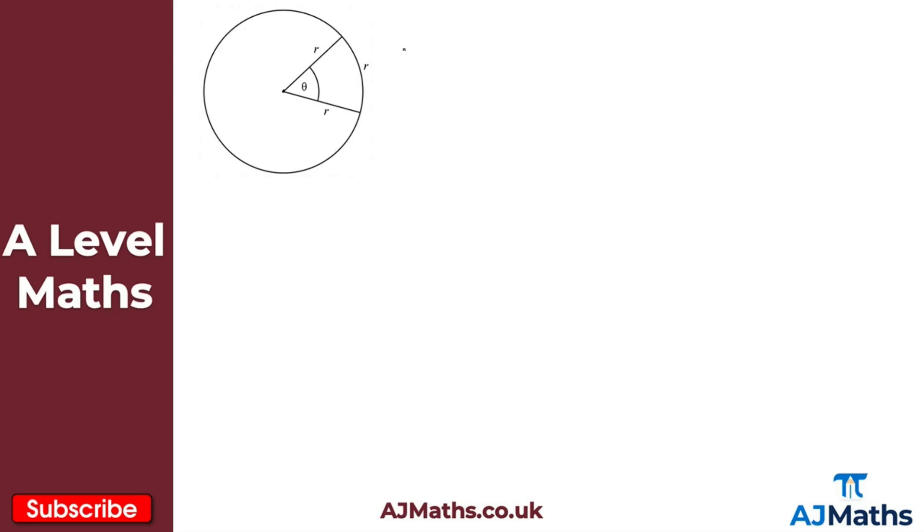So what that means then is this angle here represents one radian. I've got one radian, and one radian is equal to 180 divided by π.